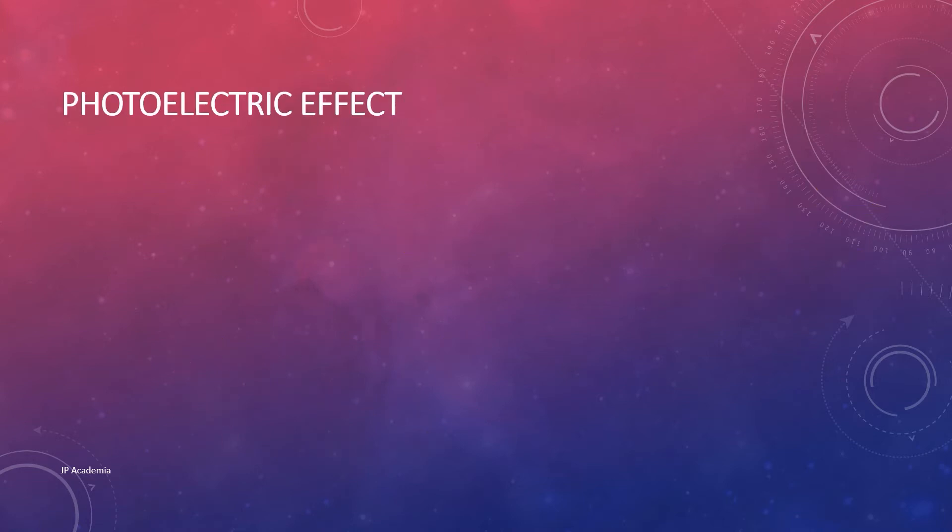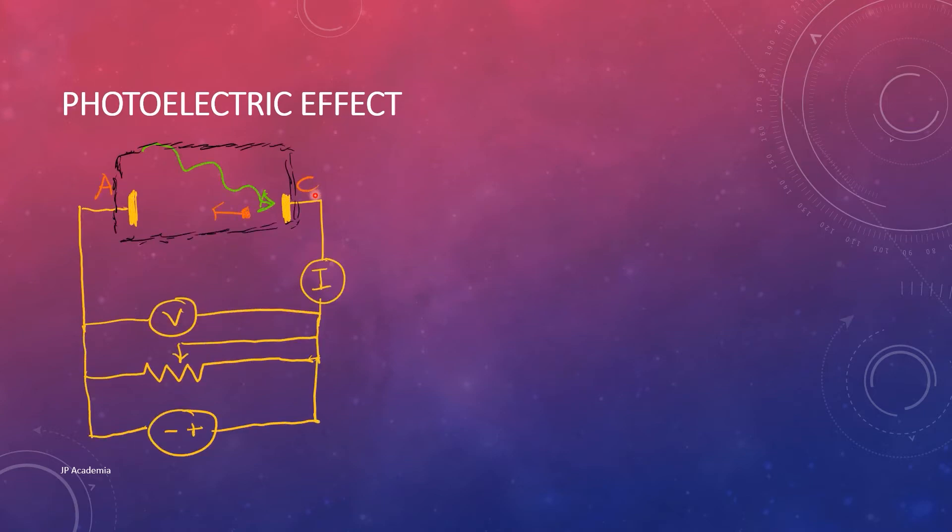We have this experiment wherein a light shines on a given metal surface and placed inside an evacuated tube. During the process, electrons are emitted from this metal surface. Thus, if we apply a potential across this anode A, or the collector and cathode C, the emitter, a photocurrent will be detected by our ammeter if the anode is positive and the cathode is negative.